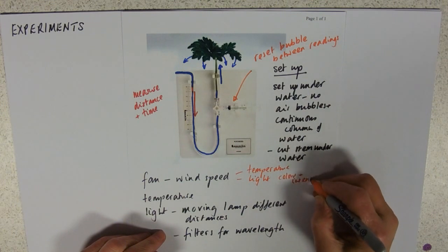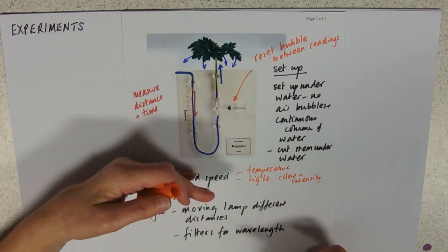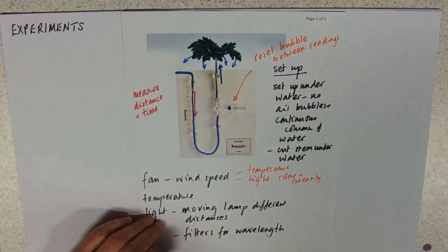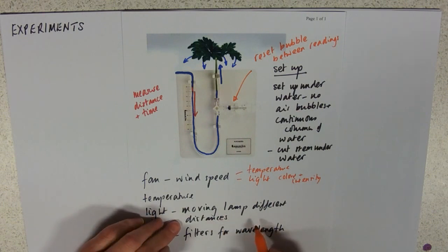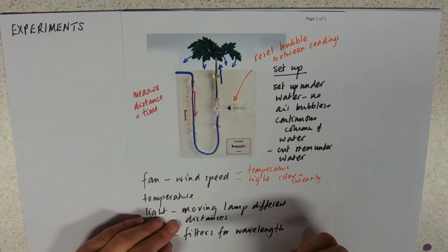So you'd put your lamp the same distance away. If you're doing temperature, you're going to need to keep the wind speed the same, the light colour and intensity the same. If you're doing light, by moving the lamp different distances, you'd need to keep your wavelength the same, you'd need to keep your wind speed the same, you'd need to keep the temperature the same.